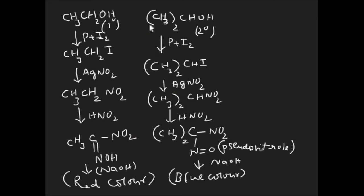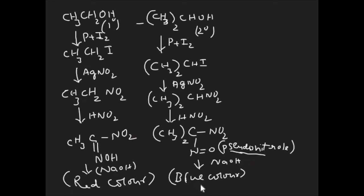Now let us see how secondary alcohol gives the Victor Meyer test. Secondary alcohol, if treated with phosphorus and iodine, gives iodide; iodide treated with silver nitrite gives nitroalkane; and further treated with nitrous acid, you get pseudonitrol. If you treat this with sodium hydroxide, you will get the salt of pseudonitrol, which gives blue color. In that way you can identify secondary alcohol.